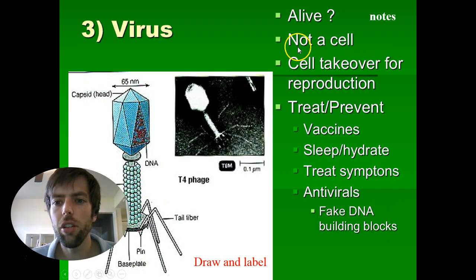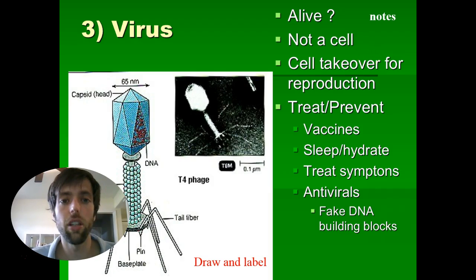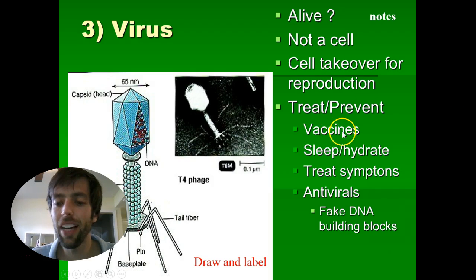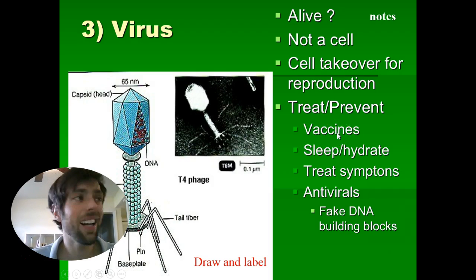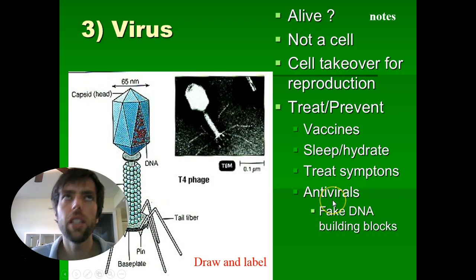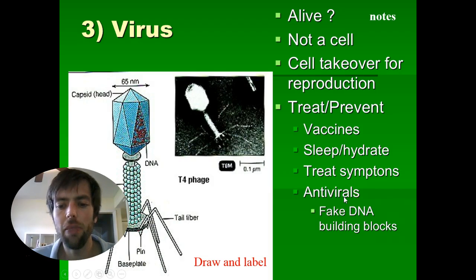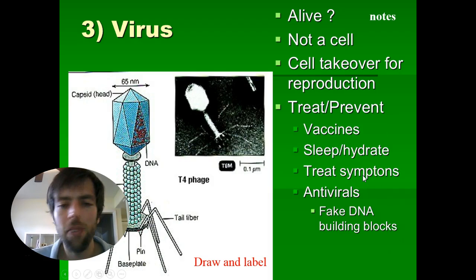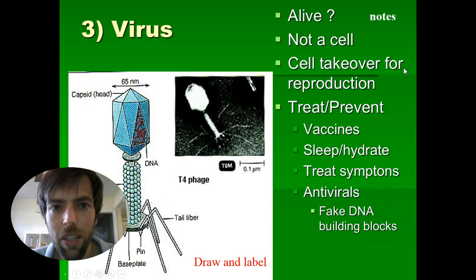As far as reproduction, you can write down 'cell takeover,' and also for the harmful column, 'cell takeover.' The method of their reproduction is what makes them so deadly. To treat or prevent viruses, we take vaccines to prevent them. If you get a virus, there's not a lot you can do to treat it. For some really serious viral infections there are antivirals, but for most viral infections like a cold, we just try to sleep, hydrate, and buy over-the-counter medication to treat symptoms while waiting for our body to fight it off.